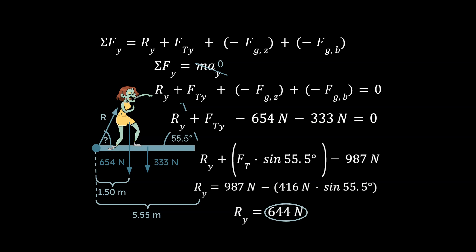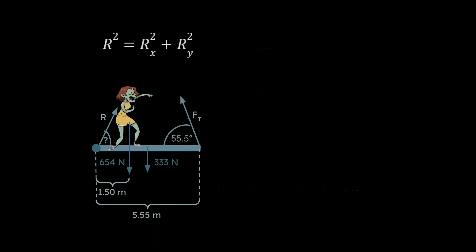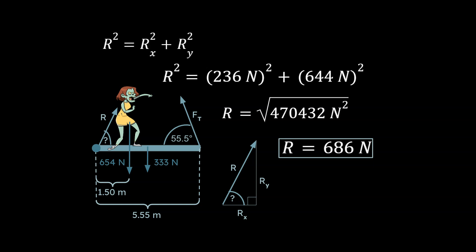Now we know R in the Y. We know R in the X. How would we go about solving for the hypotenuse of a right triangle when we know the two legs? Easy, right? You're going to use the Pythagorean Theorem. And so you can do that, and I've done that here. And you end up with this answer.